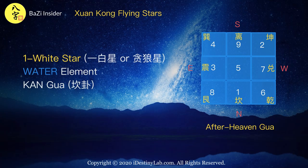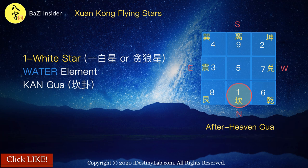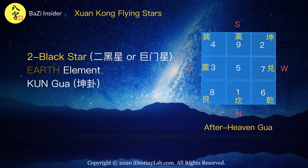One white star is also known as Yi Bai Xing or Tang Tang Xing in Chinese. Its fine element is water and it is located inside the Kan Gua of the 8 trigrams Ba Gua palaces. Two black star is also known as E Hei Xing or Ji Men Xing in Chinese. Its fine element is earth and it is located inside the Kun Gua of the 8 trigrams Ba Gua palaces.